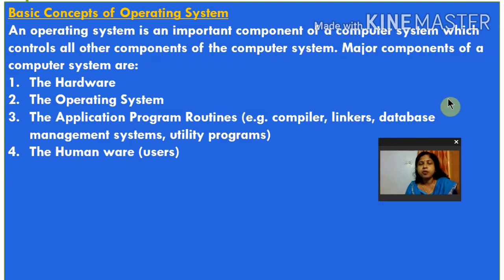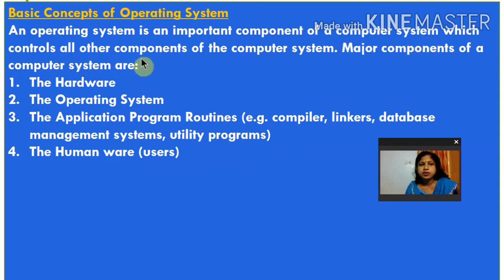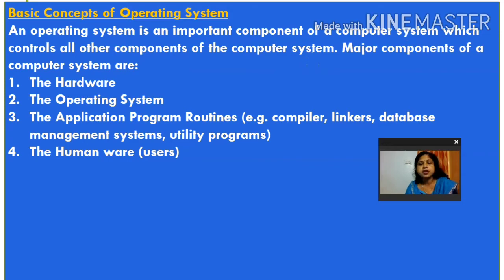What is the basic operating system? An operating system is an important component of a computer system which controls all other components of the computer system. Without an operating system, the computer is nothing — it will become a hollow box.